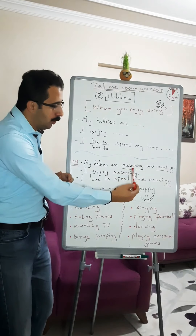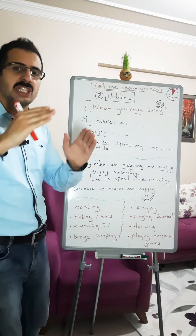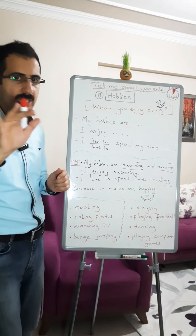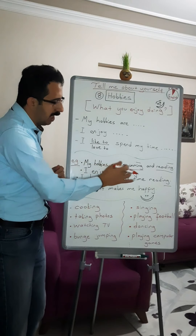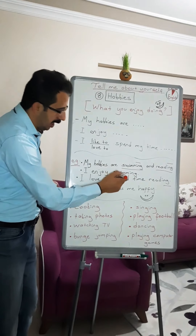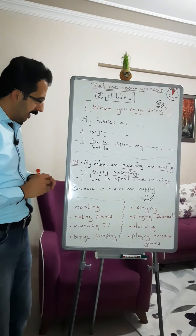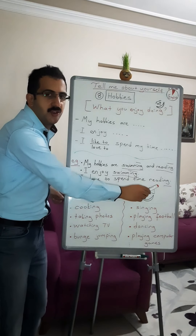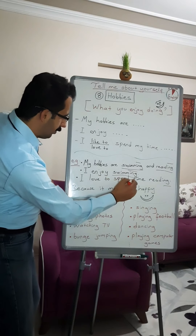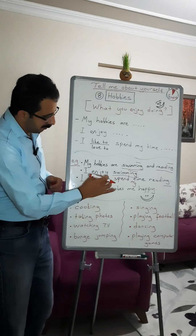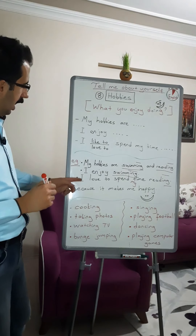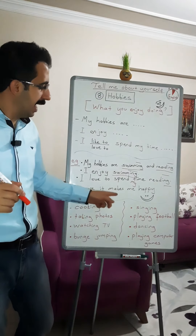For example: 'My hobbies are swimming and reading.' Notice we say swimming and reading — not swim or read. You can also say: 'I enjoy swimming.' And: 'I love to spend my time reading because it makes me happy.' After 'enjoy' and 'spend my time,' we use the -ing form.